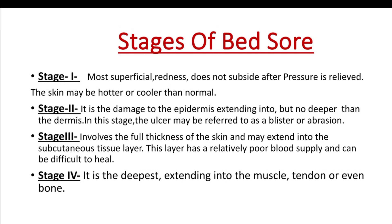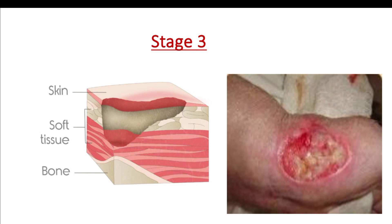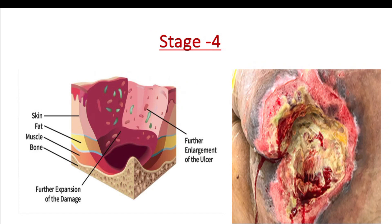Stage 4 is the deepest stage, where the ulcer extends into the muscle, tendon, or bone. In stage 4, the ulcer goes through the epidermis, dermis, subcutaneous tissue, muscle, and even reaches the bone. This is a full thickness ulcer and is the most severe stage of bed sore.